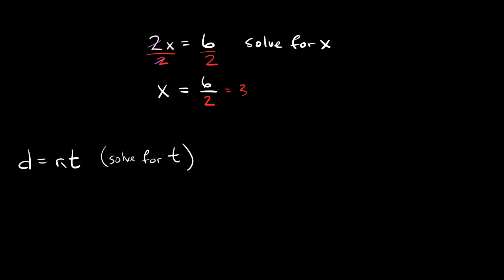If we want to get t by itself, that means we need to get rid of the r right here. Since we're multiplying, in order to undo the multiplication, I need to divide. I need to divide by whatever I'm trying to get rid of, which would be the r. Whatever you do to one side of the equation, you do to the other. You basically treat this the exact same way — up here we were trying to get rid of the 2, so we divided by 2. Down here we're trying to get rid of this r, so we divided by r. We have an r on top and on the bottom, so those cancel out. On this side of the equal sign, we're just left with t.